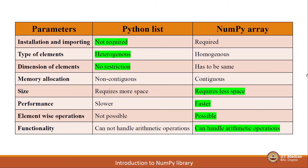Moving to the next parameter, elementwise operations. In Python lists, we cannot do elementwise operations in a single instruction. Instead, we have to iterate over the list and access individual elements in order to do such operations. Whereas for NumPy, it is very much possible to perform elementwise operations in a single statement.